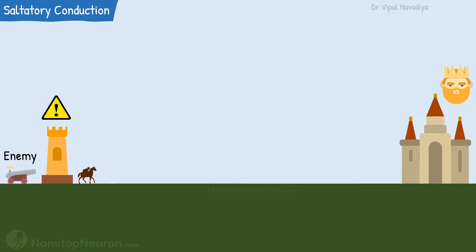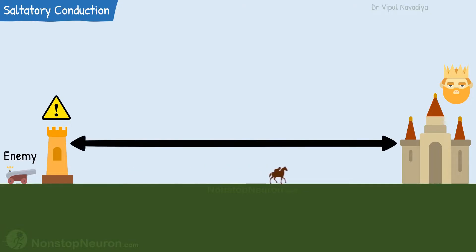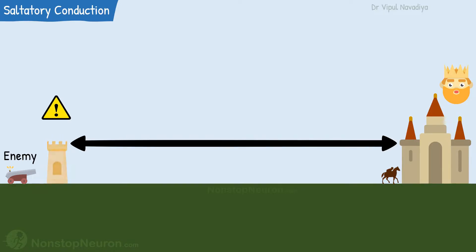The simplest way to do so would be sending a human messenger personally to the king. But considering the distance between the border and the palace, this would take days for the person to reach the king. And by that time, the damage might have already got worse at the border.